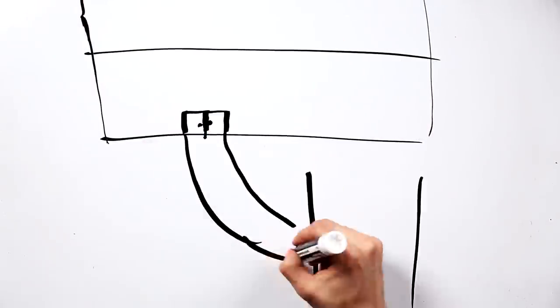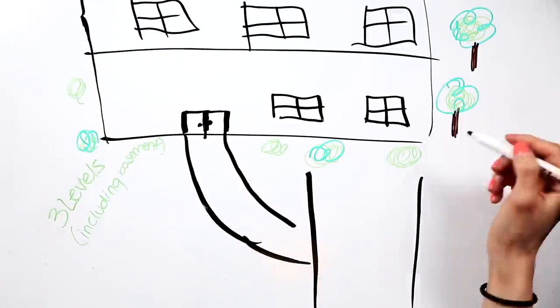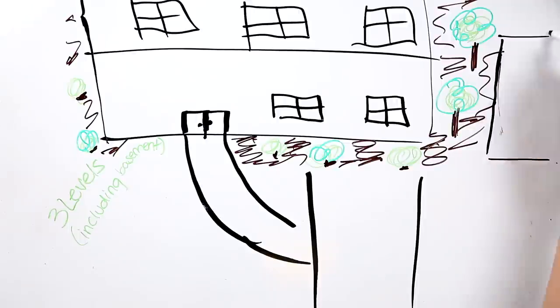When we first got to Jordan, we moved in with my dad's parents. They had a huge three-level house, including the basement. They needed it because they have like eight or nine kids.